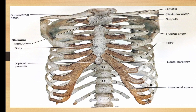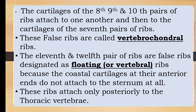The 11th and 12th pairs of ribs are called floating or vertebral ribs. Their costal cartilages at their anterior ends do not attach to the sternum at all, but their posterior ends attach to the thoracic vertebrae. The cartilages of the 8th, 9th, and 10th pairs of ribs attach to one another and then to the cartilage of the 7th pair of ribs — these false ribs are called vertebrochondral ribs.